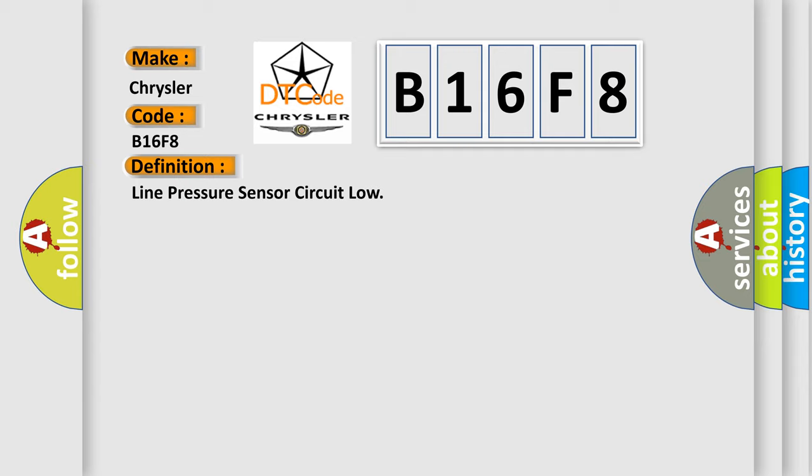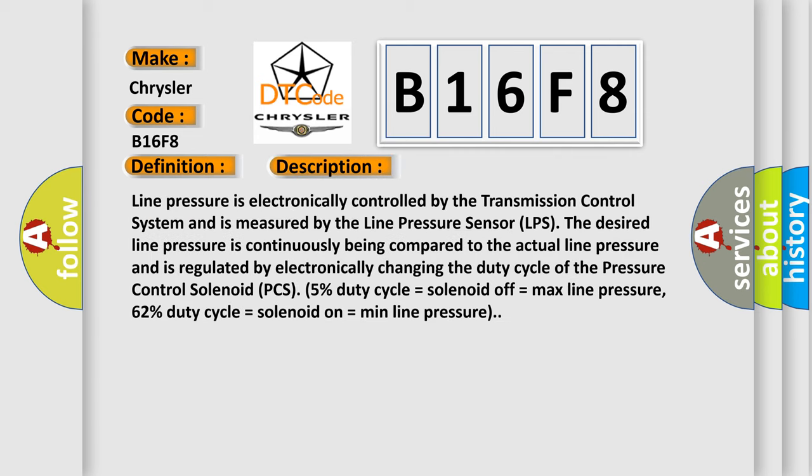Here is a short description of this DTC code. Line pressure is electronically controlled by the transmission control system and is measured by the line pressure sensor (LPS). The desired line pressure is continuously being compared to the actual line pressure and is regulated by electronically changing the duty cycle of the pressure control solenoid (PCS). 5% duty cycle equals solenoid off equals max line pressure. 62% duty cycle equals solenoid on equals min line pressure.